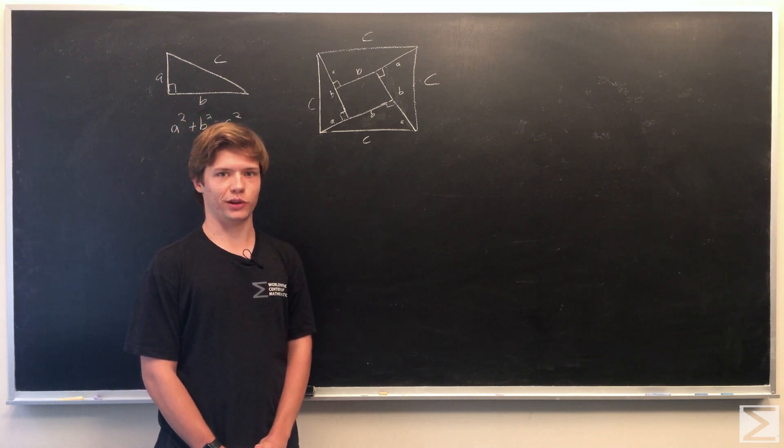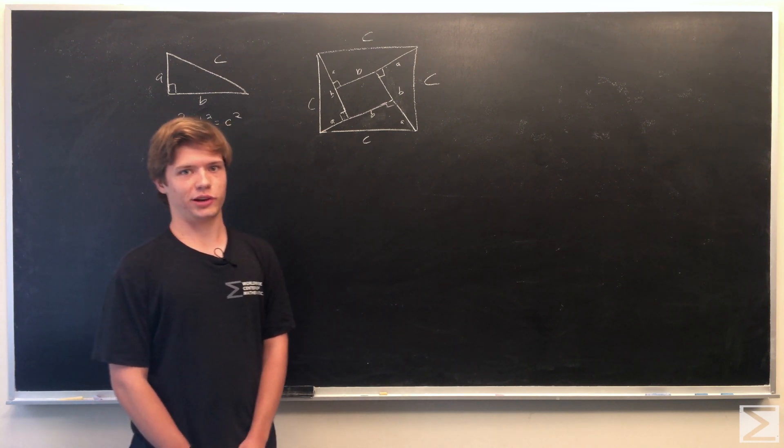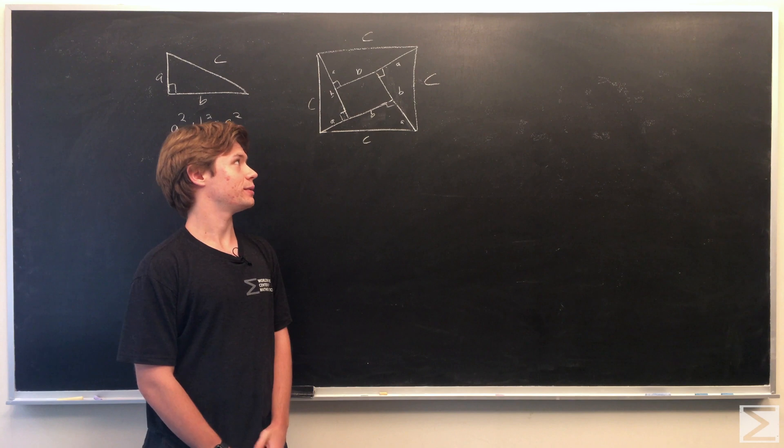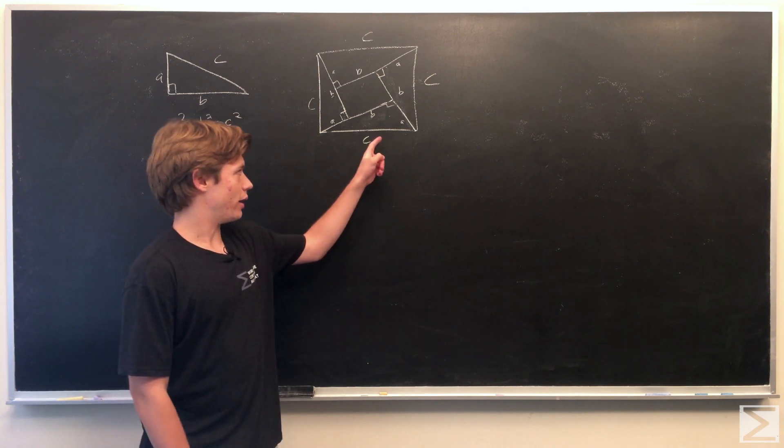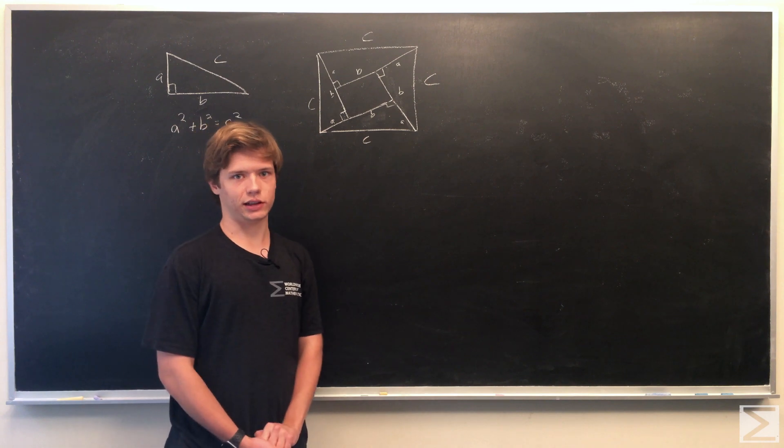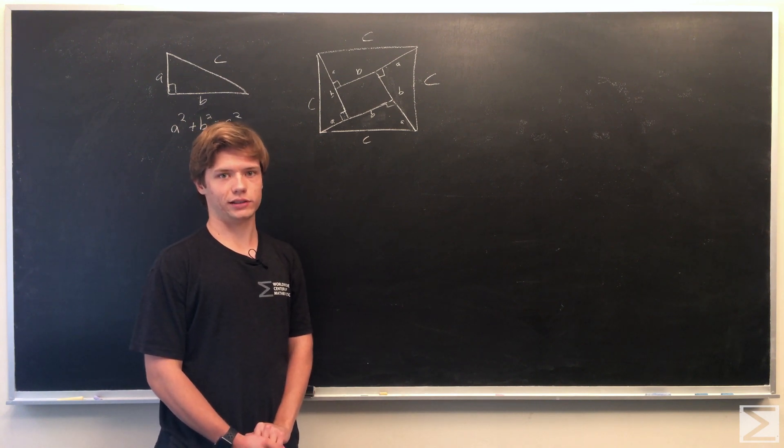So there are two ways of doing this. The first way is pretty easy, it's just the area formula of a square. The sides of the square are c and so the first way to find the area is c squared.